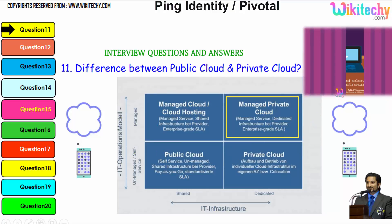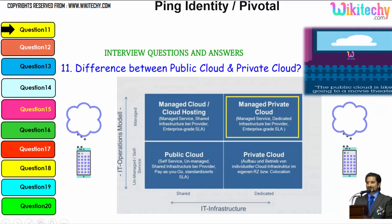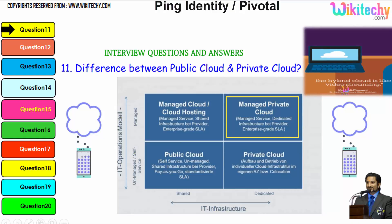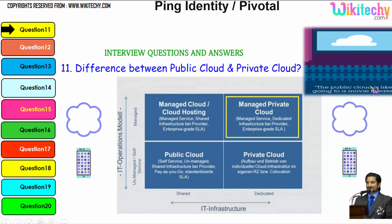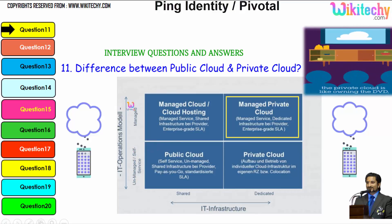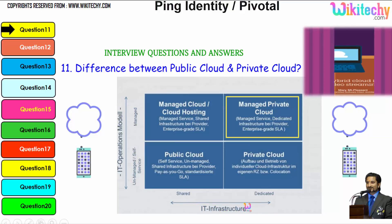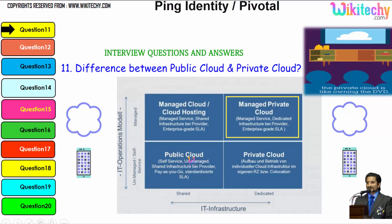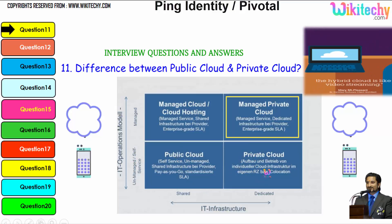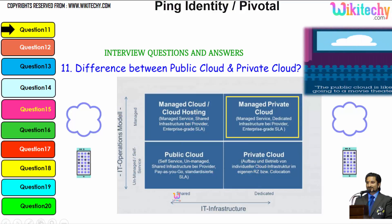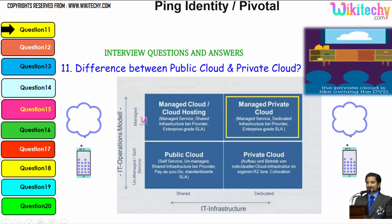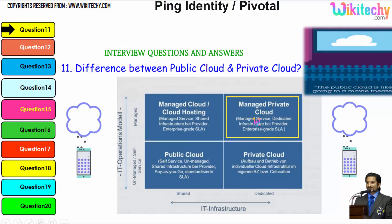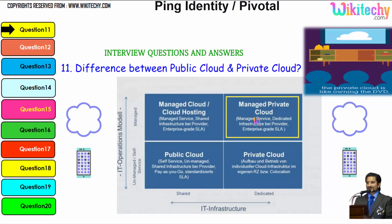You can see it here: public cloud is like viewing a film in the theatre, private cloud is like viewing a film on DVD at home, and hybrid cloud is like video streaming. Looking at the IT operations model and IT infrastructure: public cloud provides shared and unmanaged services; private cloud provides dedicated unmanaged services; shared managed cloud provides managed cloud hosting; and managed private cloud provides a managed dedicated environment.